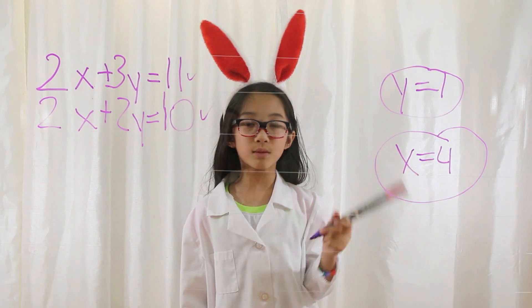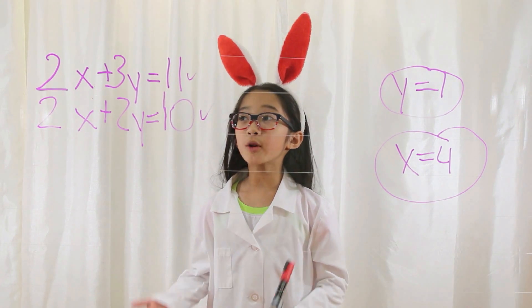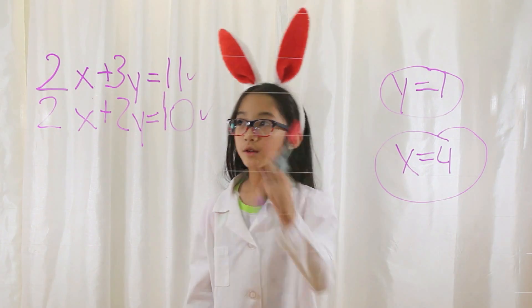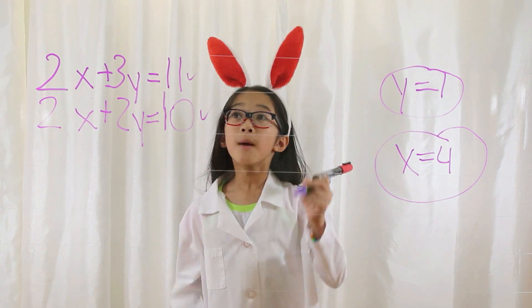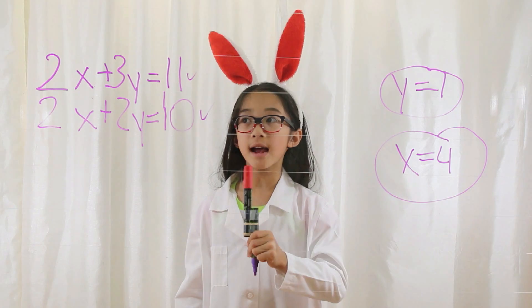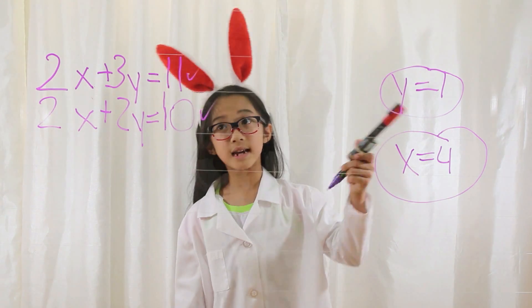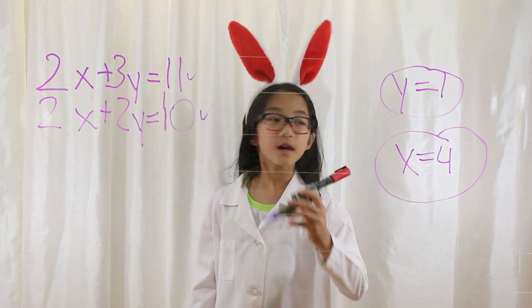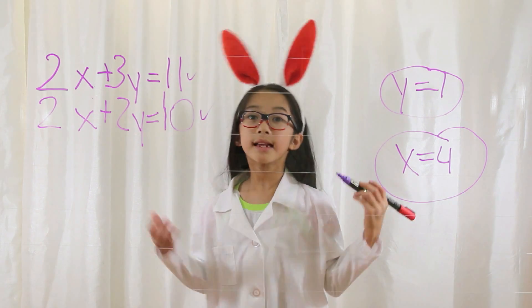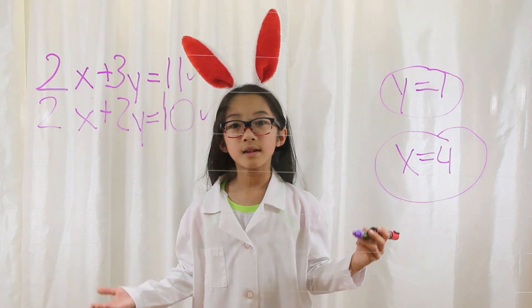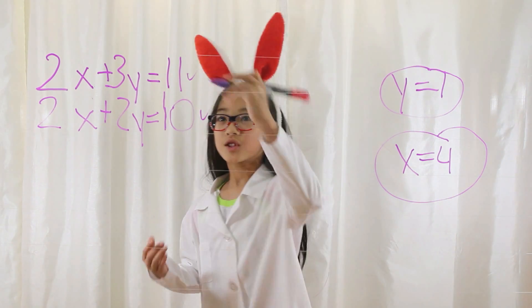x equals 4. Now I'm going to explain the top one. So the first equation will look like 2(4) plus 3(1) equals 11. 2 times 4 equals 8, and 3 times 1 equals 3. So 8 plus 3 equals 11. Check.